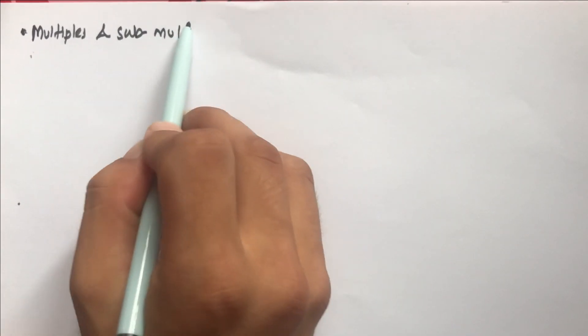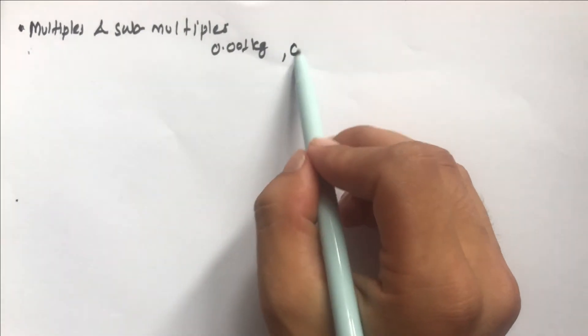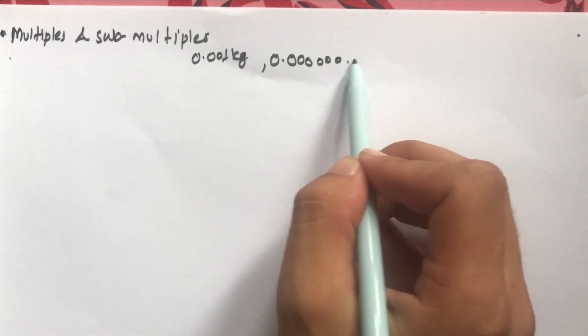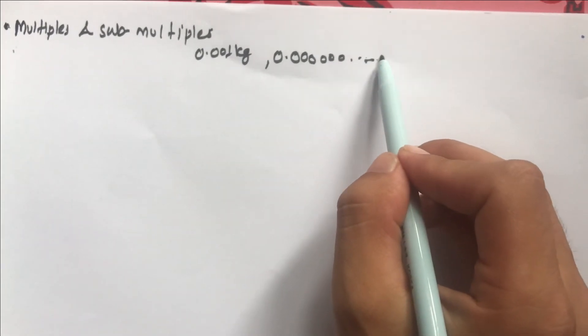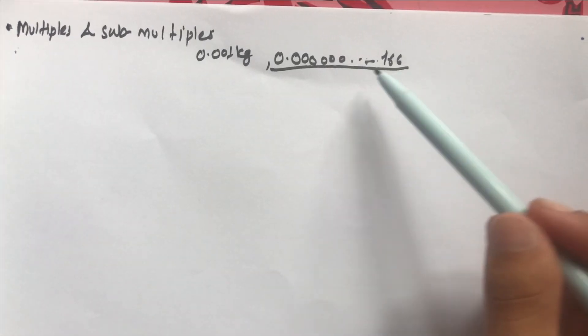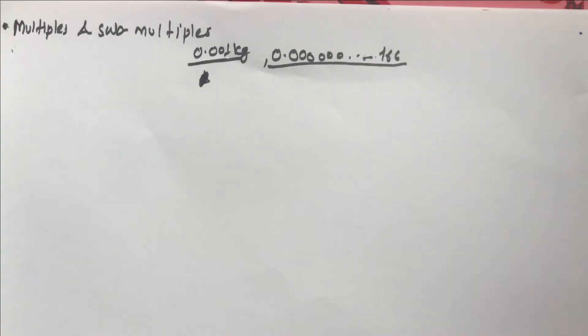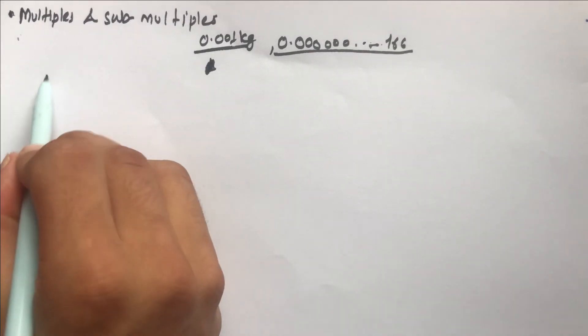Now let's talk about multiples and sub-multiples. For example, the mass of a proton is something like 0.000...166 — a very small number. Writing out all those zeros could lead to errors and is very tedious. So we use multiples and sub-multiples to represent these numbers more conveniently.